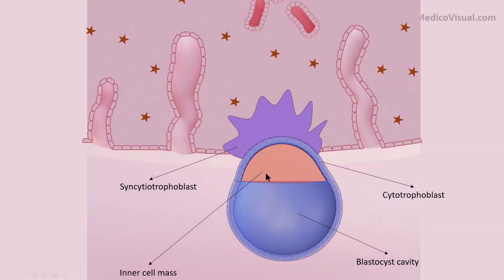At the end of the first week, the embryo is partially embedded into the endometrium of his or her mother, with a cavity ventral to the inner cell mass or embryo proper. The name of this cavity is blastocyst cavity.